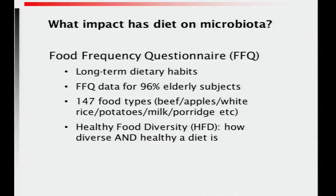We also generated what is known as the Healthy Food Diversity Index, which pretty much does exactly what it says on the tin — it measures how diverse and healthy your diet is. Each individual food is given a health value: 0.268 for fruit and veg, and 0.0001 for lard. This is then multiplied up by the diversity of the diet, so if you have a diverse diet of fruit and veg you get a very high value, and if you have a low-diversity diet of mainly animal products you get a very low value.